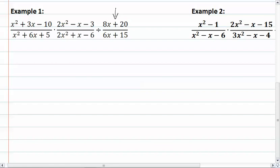So our first thing that we have, our x squared plus 3x minus 10, factors as x plus 5, x minus 2.